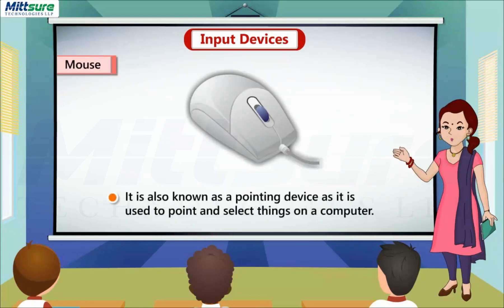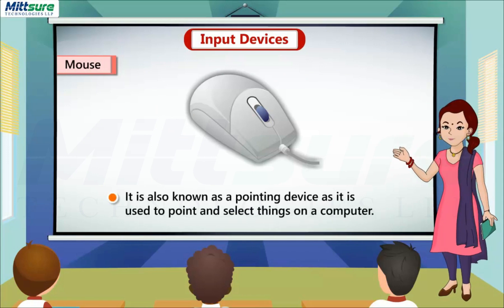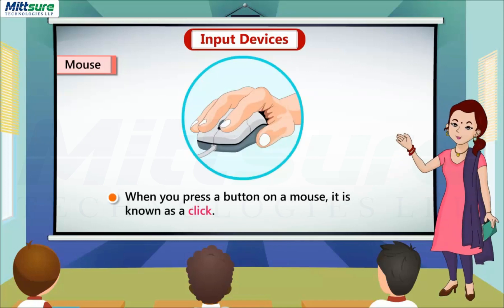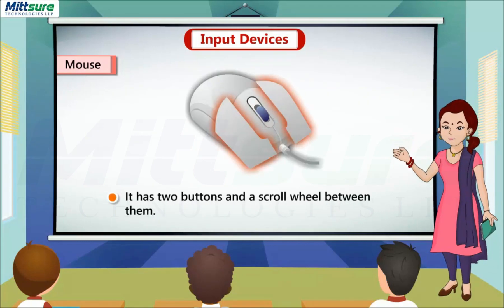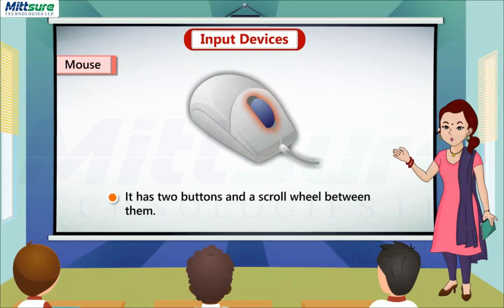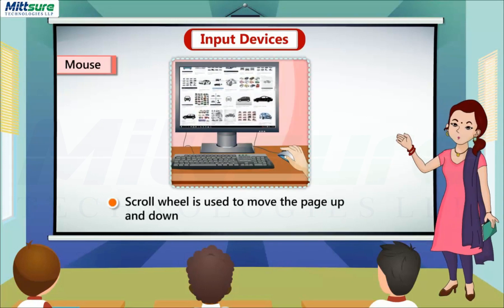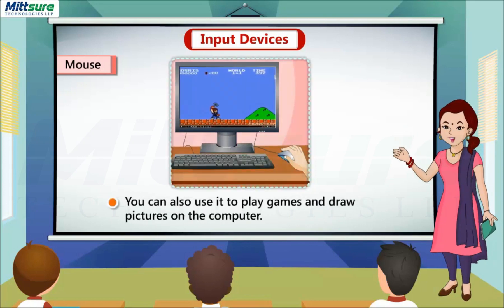Mouse: it is also known as a pointing device, as it is used to point and select things on a computer. When you press a button on a mouse, it is known as a click. It has two buttons and a scroll wheel between them. The scroll wheel is used to move the page up and down. You can also use it to play games and draw pictures on the computer.